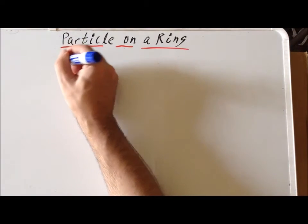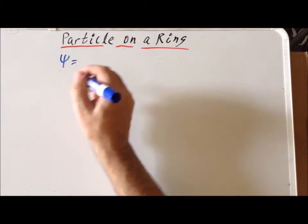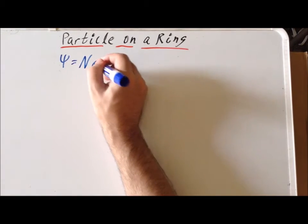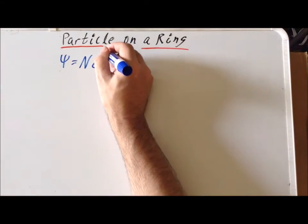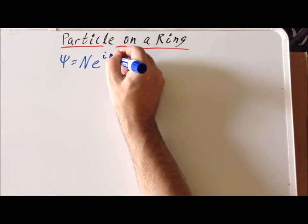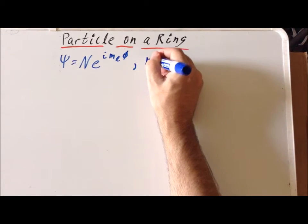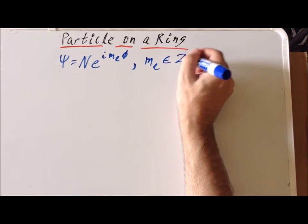Recall that the solutions for the particle on a ring problem had the general form some constant times e to the i m sub l times phi, where m sub l was an integer, so that's a whole number.